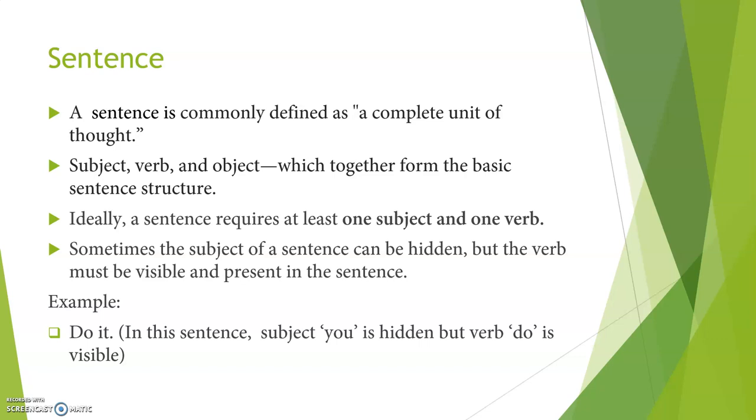Ideally, a sentence requires at least one subject and one verb, but in some cases we could see that in a sentence subject could be hidden. But even if the subject is hidden, the verb must be visible and present in the sentence.